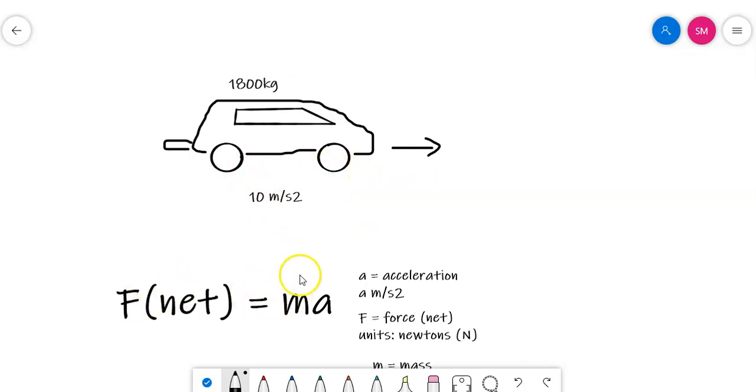To work this out, we need to just put those values into this formula. So F equals mass, so it's 1,800, and that is going to be times the acceleration, which is 10. So we're going to get 18,000, because we just need to add a zero onto the end. It'll be times by 10.